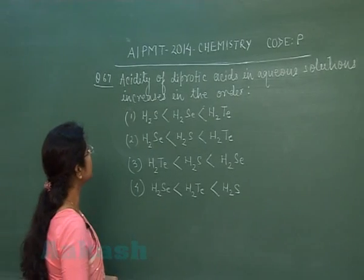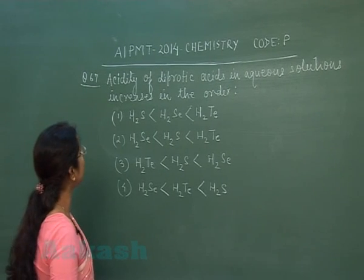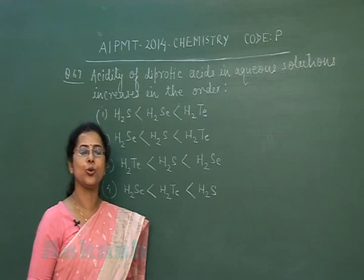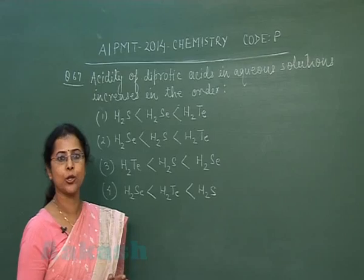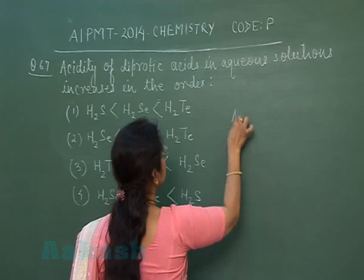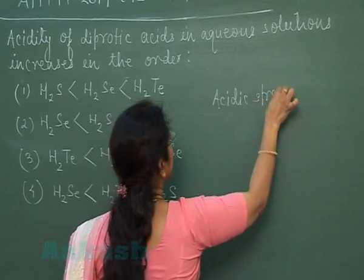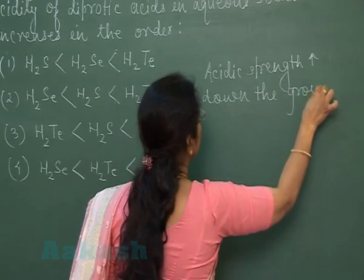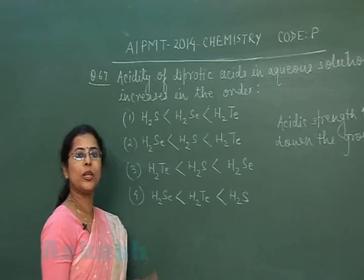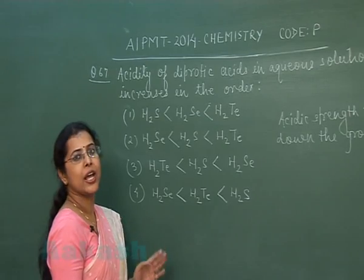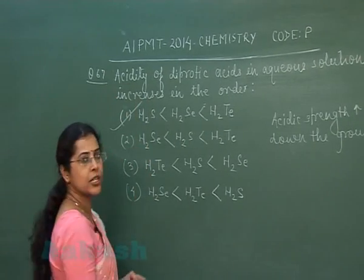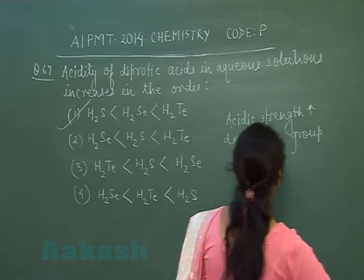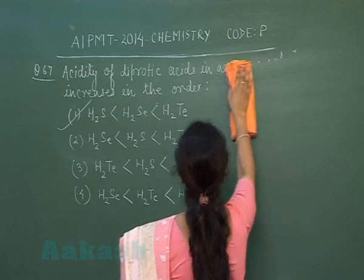Question number 67: Acidity of diprotic acids in aqueous solution increases in the order. The options are hydrides of Group 16. As we know, for hydrides of Groups 15, 16, and 17, acidic strength increases down the group. So H₂S is the weakest acid, H₂Se is stronger, and H₂Te is the strongest. The correct option is the first one.